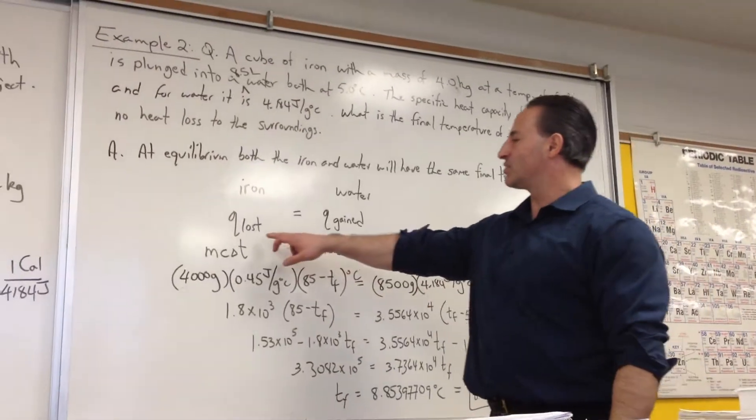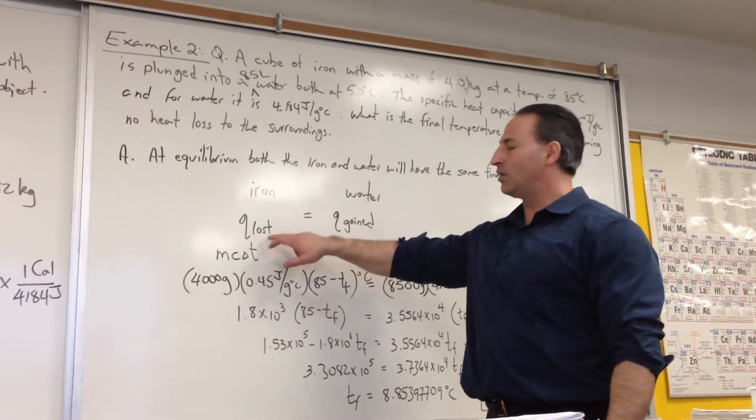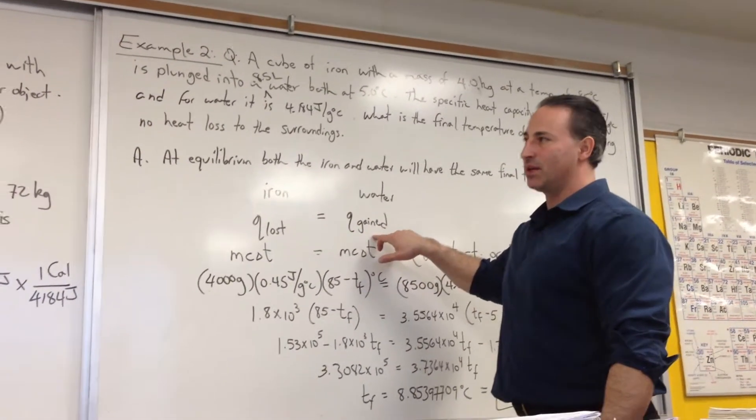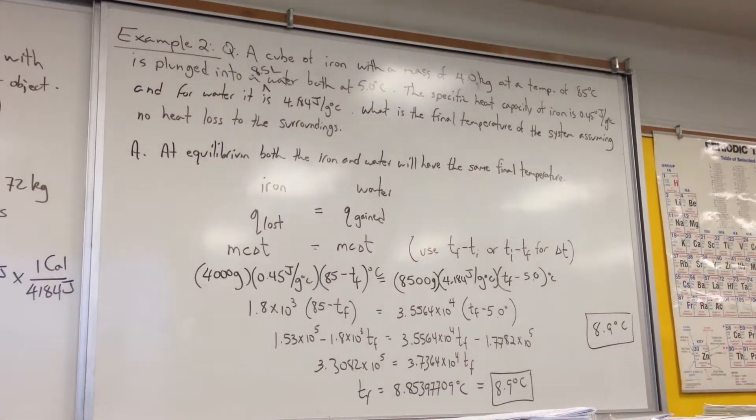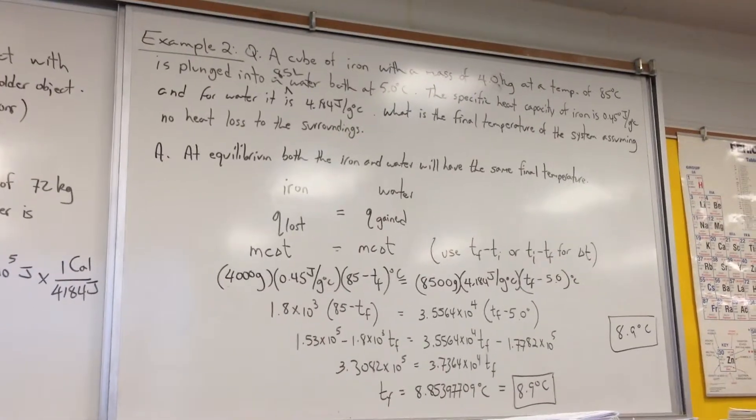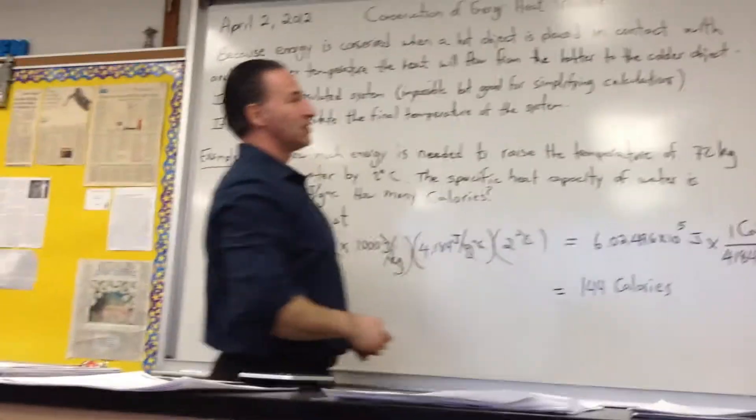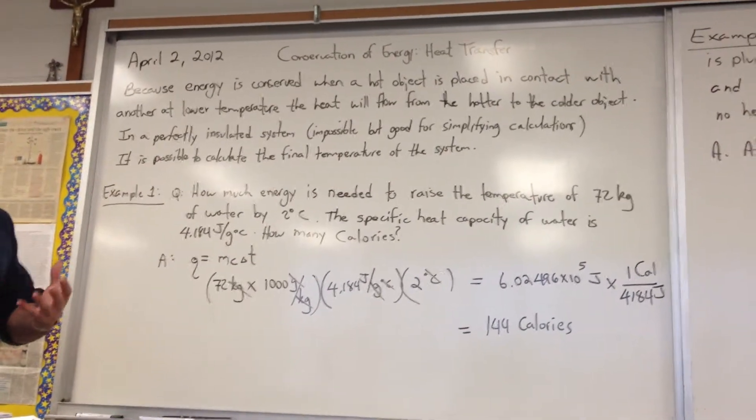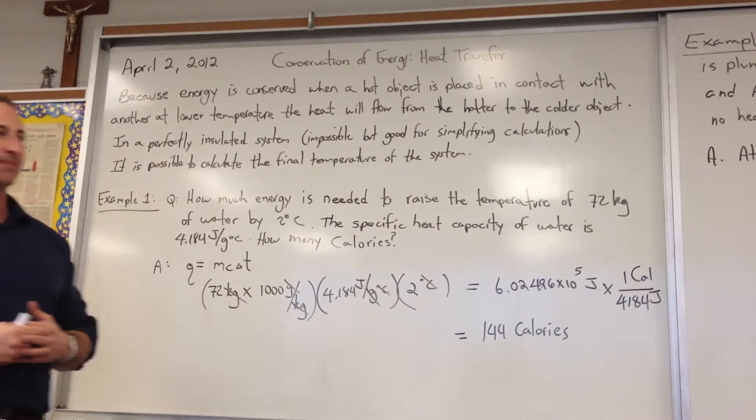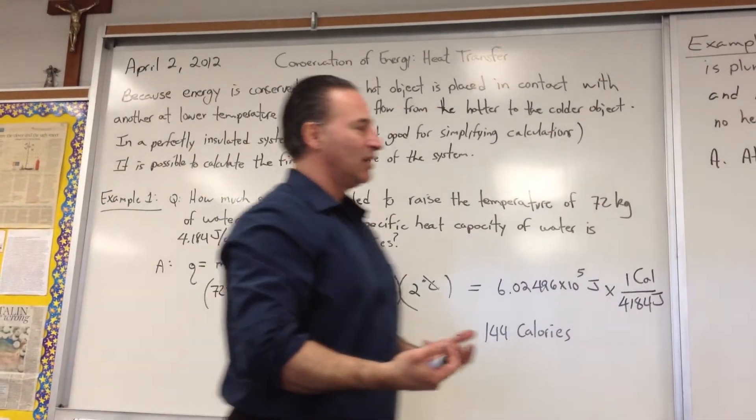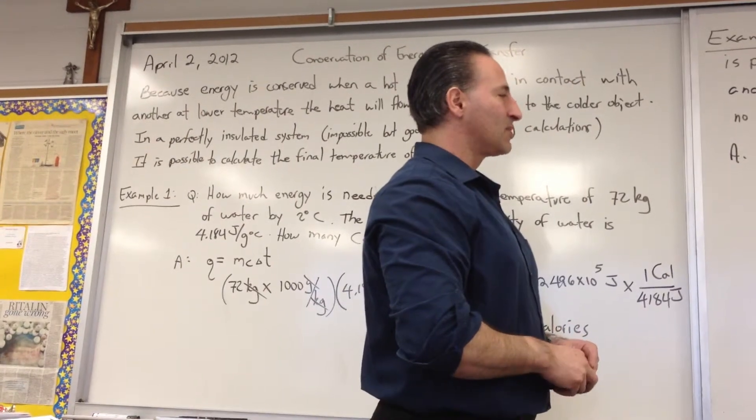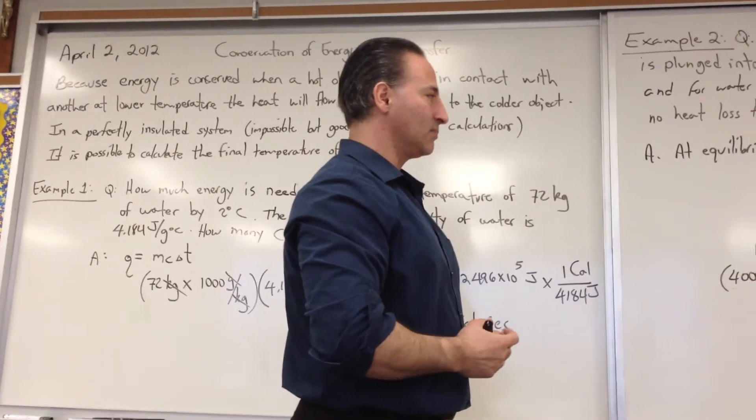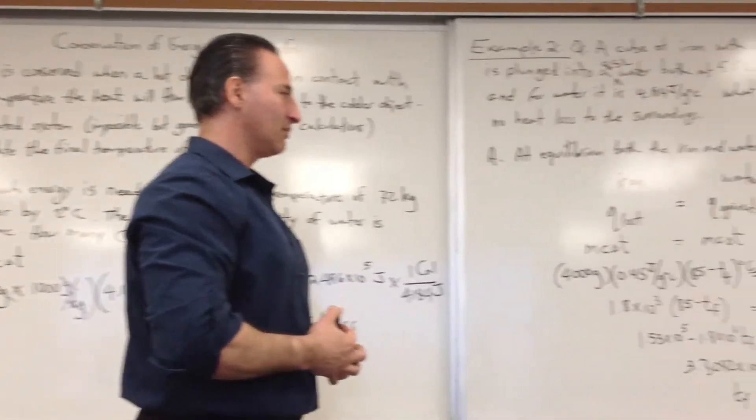In the second example, we show how energy is conserved because the heat lost by something has to be gained by something else. But we make one assumption. We say that it is in a perfectly insulated system. And I put brackets, that's impossible, but it's good for simplifying calculations. It's literally impossible to have a perfectly insulated system. But we can make that assumption, and usually the heat loss in a well insulated system is small enough to be negligible. And that helps to simplify any calculations that involve heat flux.